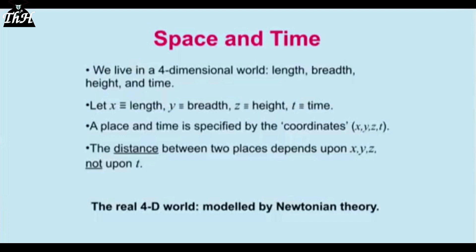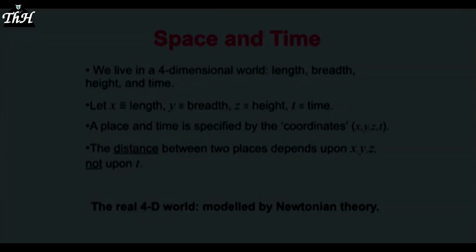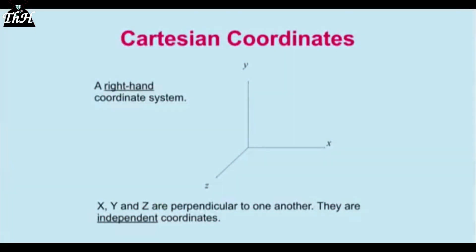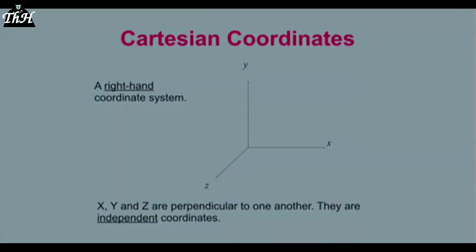The distance between two points depends on X, Y, and Z — it doesn't depend on time. The distance between Phoenix and LA is a matter of spatial coordinates, not time. This is consistent with Newton's model. In Cartesian coordinates — X, Y, and Z — these axes are like the corner of a room: all perpendicular to and independent of one another, with no components in each other's directions.